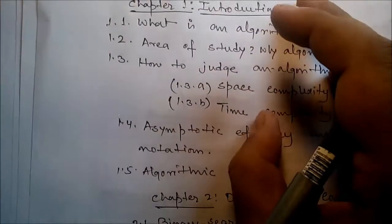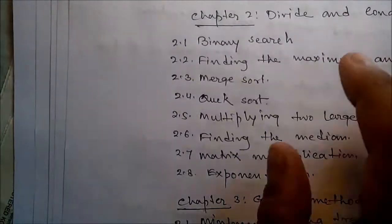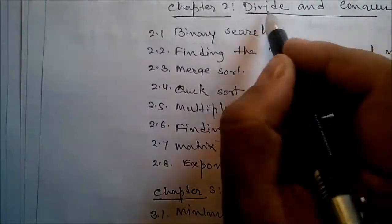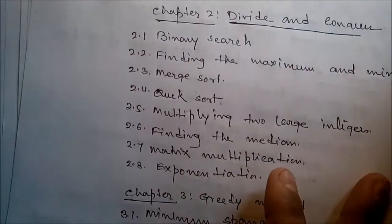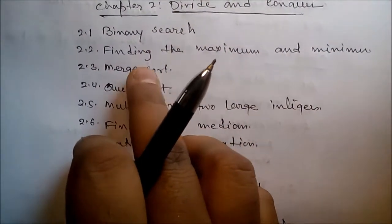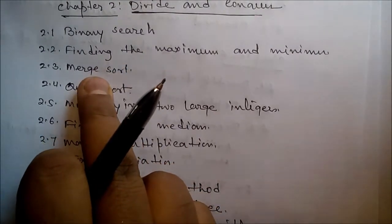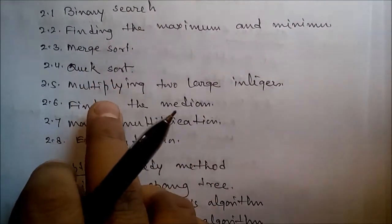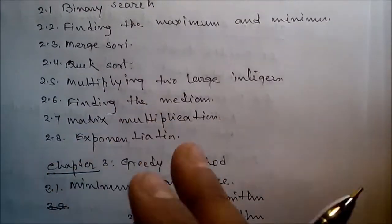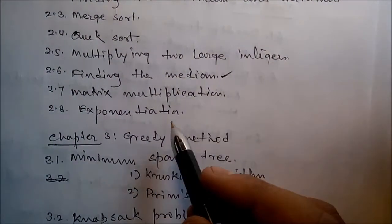In Chapter 2, we'll talk about the divide and conquer strategy. In this part we'll cover binary search, finding the maximum and minimum, merge sort, quick sort, multiplying two large integers, finding the median, matrix multiplication, and exponentiation.